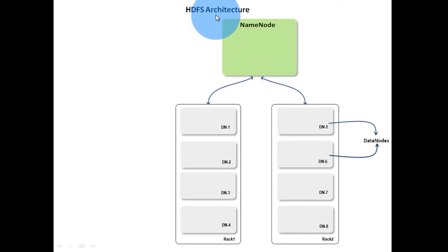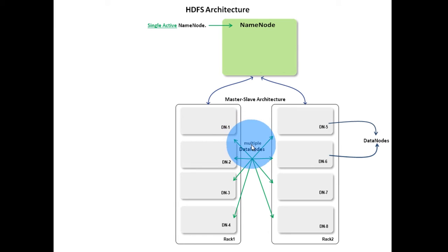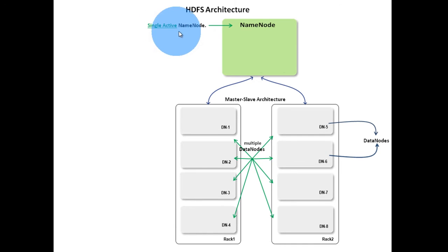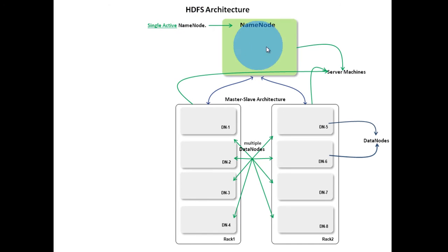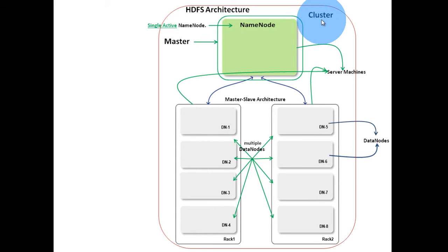Let's start with HDFS architecture. HDFS has a master-slave architecture. It has a single active name node and multiple data nodes. This is a very important point to remember: at any given point of time, there will only be one active name node. Name node and data nodes are server machines. Together they form a cluster of machines. Name node is the master of the cluster.